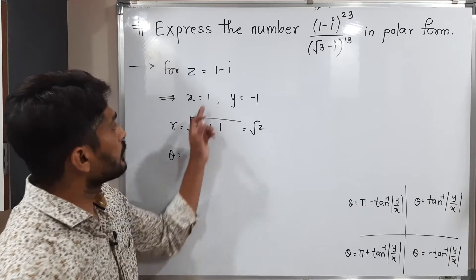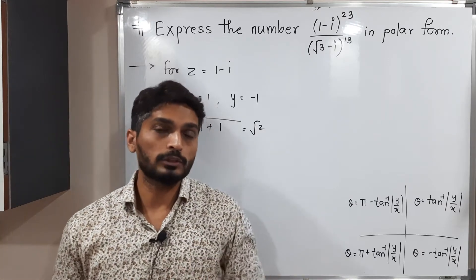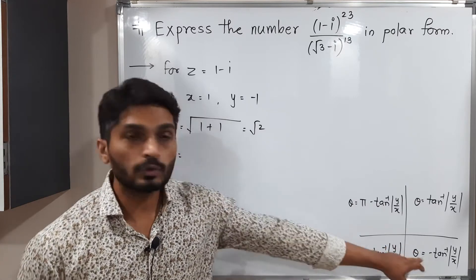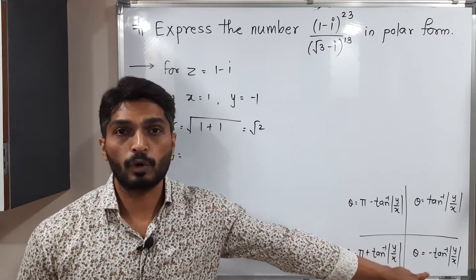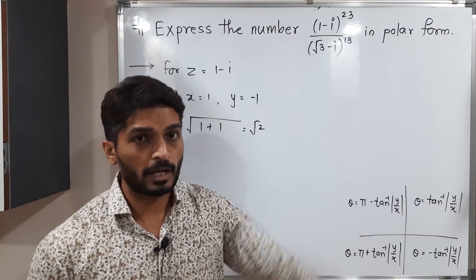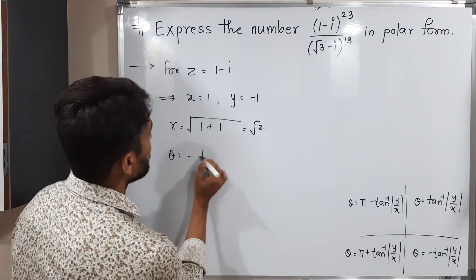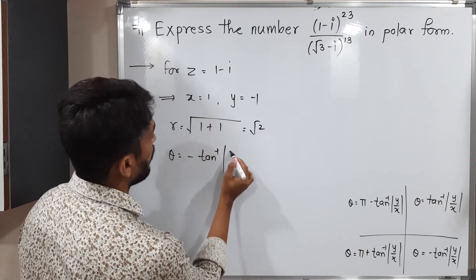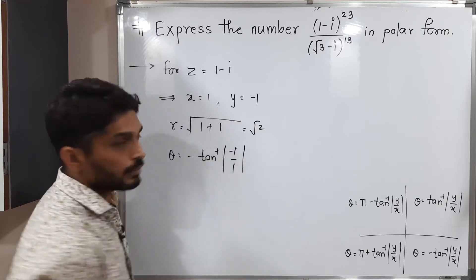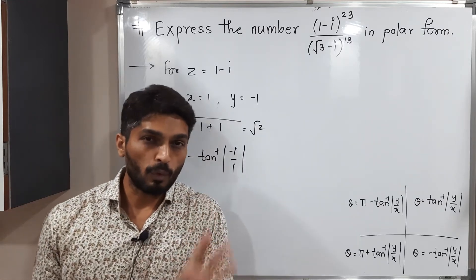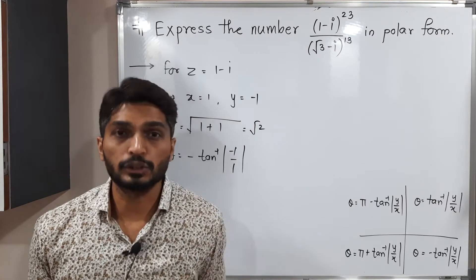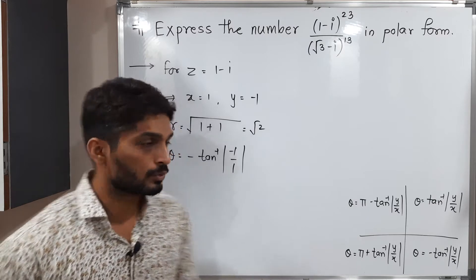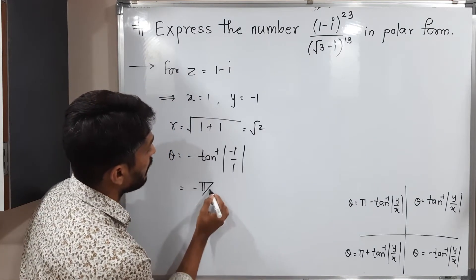Now let us think for theta. Here x is positive and y is negative, which means the given complex number lies in the fourth quadrant. So the formula of theta is minus tan inverse of mod(y/x). Because of the modulus, the minus sign vanishes and we have tan inverse of 1, which equals pi by 4. So theta equals minus pi by 4.